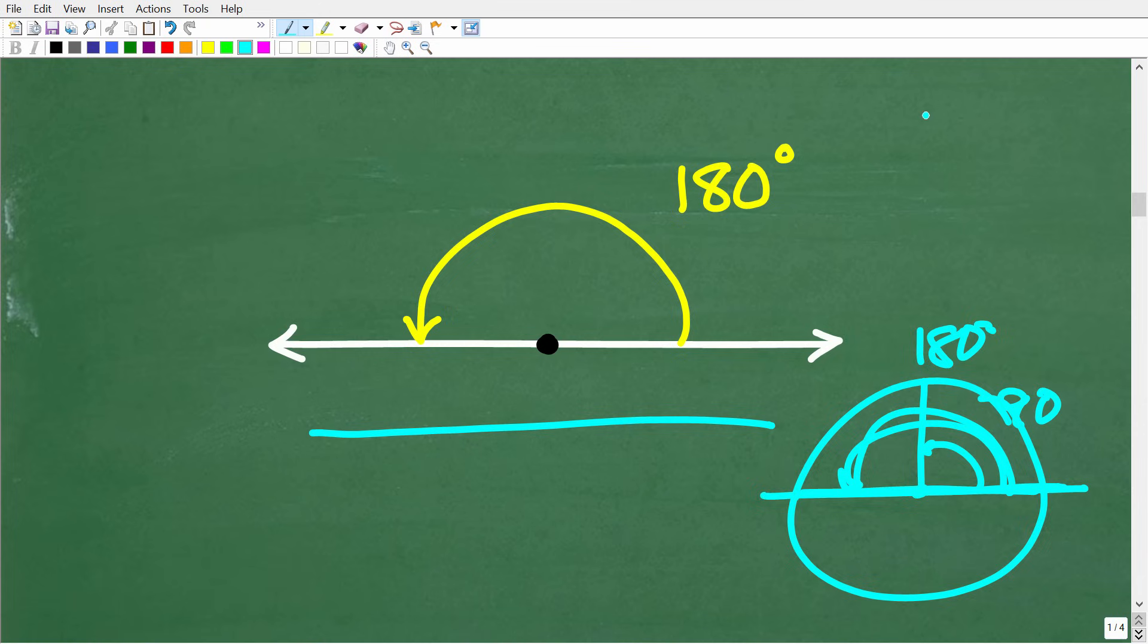So you can kind of think of this as two right angles as well, right? So we have a 90 degree angle here, and a 90 degree angle right there. So in total, we have 180 degrees.